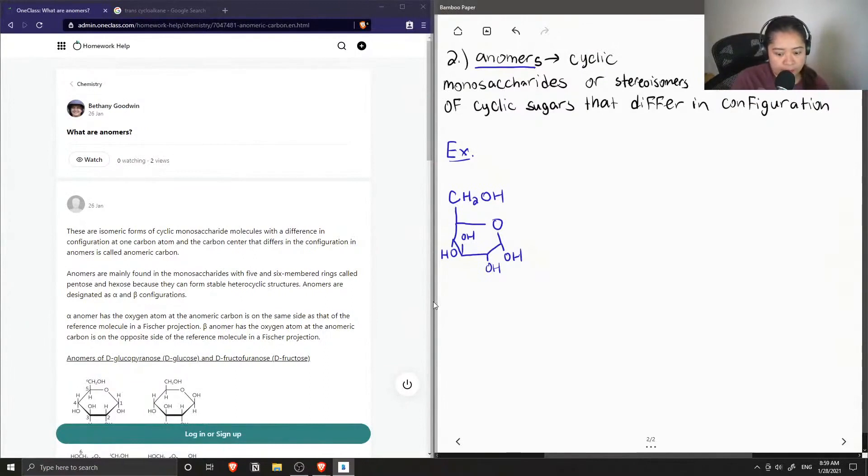And the name of this sugar is alpha-D-glucopyranose.